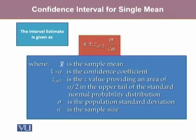The interval estimate of a single mean when sigma is known is given by x-bar plus or minus z alpha by 2 times sigma over square root of n. Where x-bar is the sample mean, 1-alpha is the confidence coefficient, z alpha by 2 is the z value providing an area of alpha by 2 in the upper tail of the standard normal distribution, sigma is the population standard deviation, and n is the sample size.